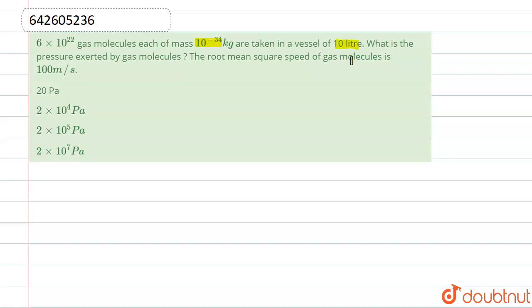Right, so let's start with our question. First, let us write the relation between pressure and RMS velocity. So this is equal to 1/3 × n × m × c² divided by volume.